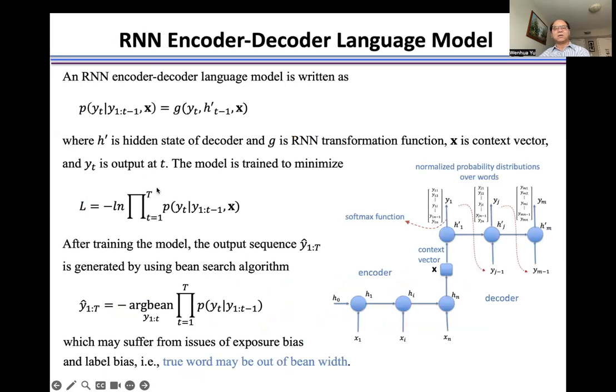Here is the RNN encoder-decoder language model. Here is the input sequence, we use this context vector x. And the output layer uses the softmax function to generate this normalized probability distribution over words.